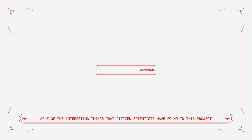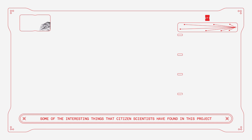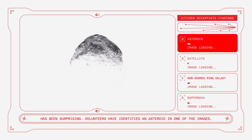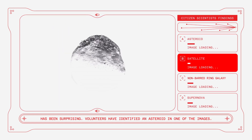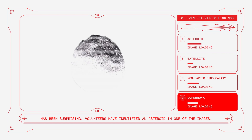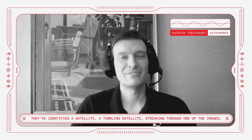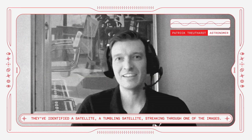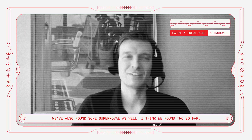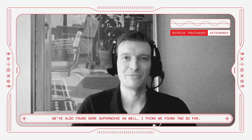Some of the interesting things that citizen scientists have found in this project have been surprising. Volunteers have identified an asteroid in one of the images, a satellite tumbling and streaking through one of the images. We've found some non-barred ring galaxies, which are actually very rare. And we've also found some supernovae — two so far.